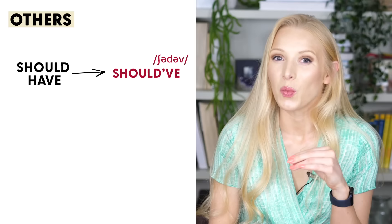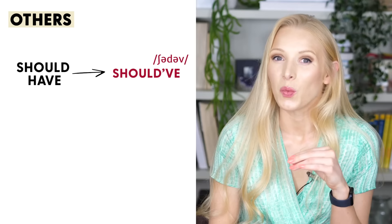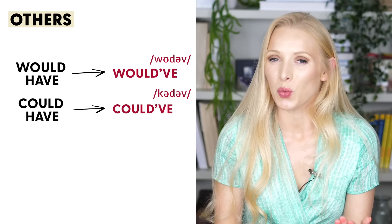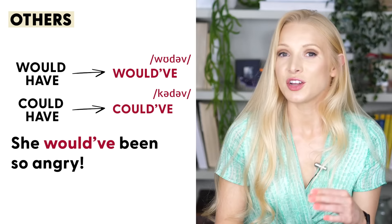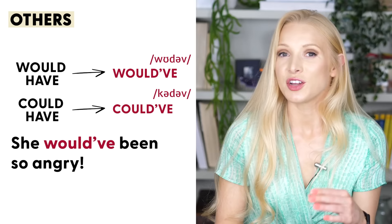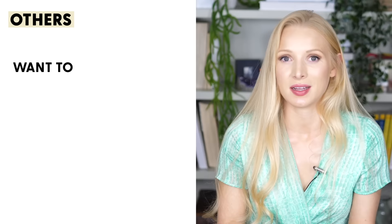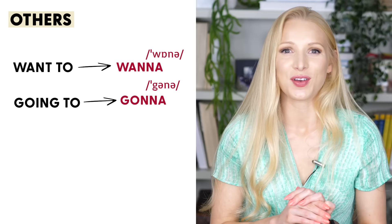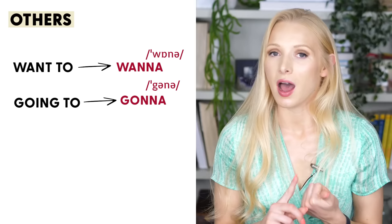Finally, here are five more positive contractions that don't follow the same patterns but you'll probably hear them quite frequently. We have 'should have' — we can also pronounce this as 'shoulda', which is way more informal. We should have left much earlier. Would and could follow the same pattern — 'she would have been so angry', 'they could have come'. And we have 'want to' and 'going to', which we shorten to 'wanna' and 'gonna' — I wanna go to yoga in the morning, I'm gonna finish this project.